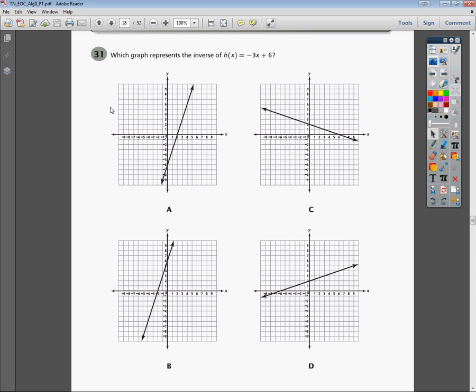The question says, which graph represents the inverse of h of x equals negative 3x plus 6? Now the reality is, this is function notation, so I'm going to convert it into slope-intercept form first. Just take that h of x and turn it into y.